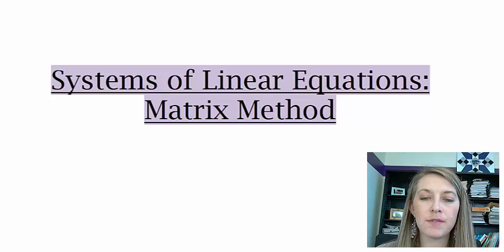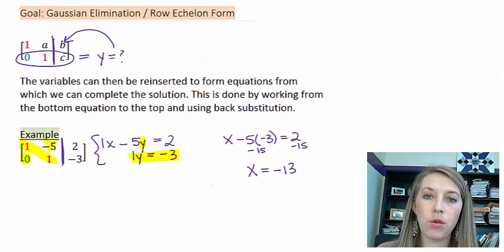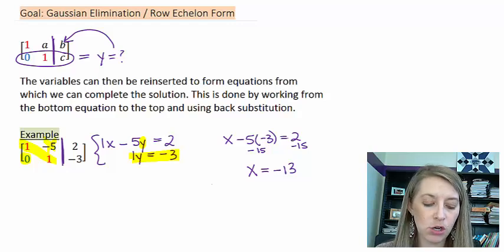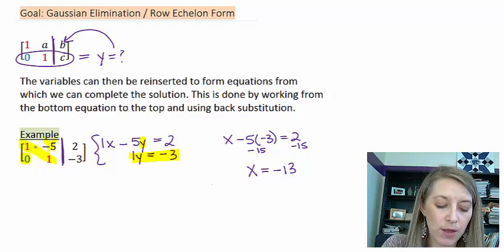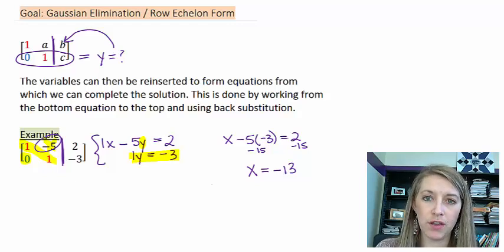So we worked through an example of solving a system of equations by using the Gaussian elimination or the row echelon form in the last example. This is where it had ones in the main diagonal, zeros below it, and then it didn't matter what we had above because we could use back substitution to figure that out.